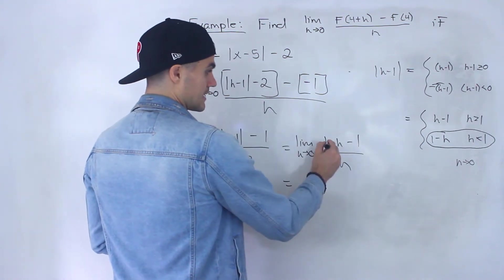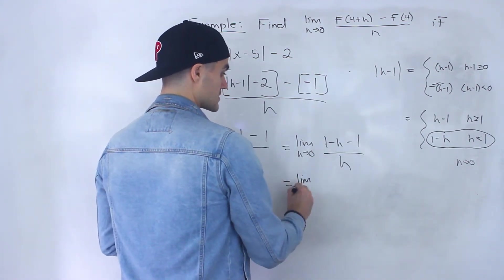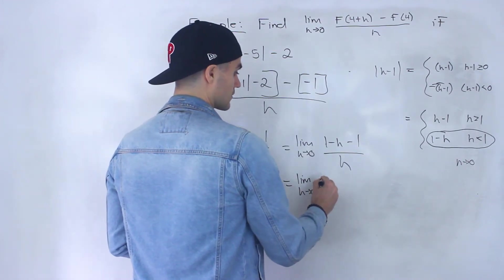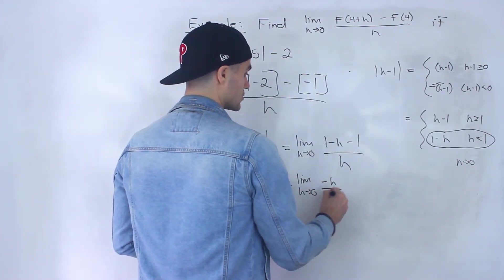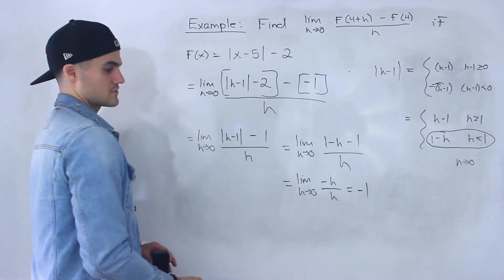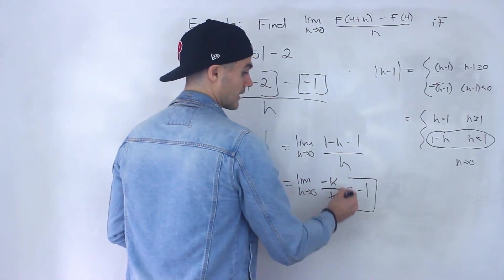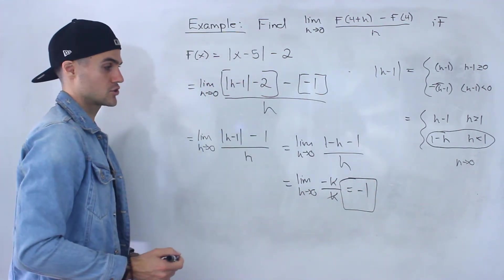And then this here, 1 minus 1, that's just 0. That nets out to 0. And you end up with -h over h, which just gives you -1, because these would cancel out. And so that ends up being the final answer for this question.